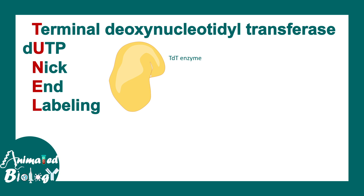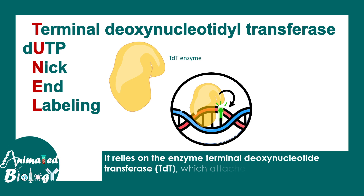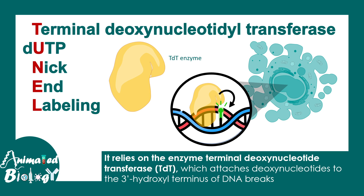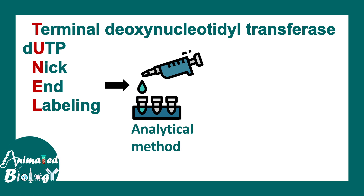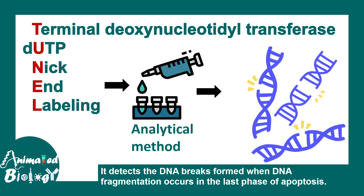It utilizes the TDT enzyme, or terminal deoxynucleotidal transferase enzyme, which can incorporate a labeled nucleotide at sites of DNA damage — wherever there is a DNA break, it would incorporate a modified nucleotide. Generally, these kinds of DNA breaks are found in apoptotic cells. This analytical method utilizes the principle of DNA breaks, which generally occurs in the late phase of apoptosis.